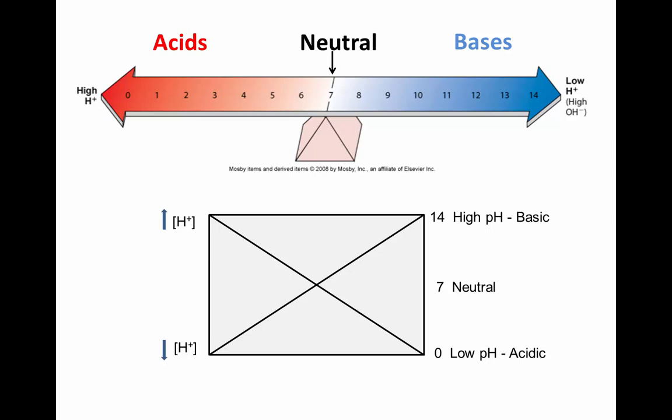Let's review: high hydrogen ion concentrations result in a low pH reading — these are acids. Low hydrogen ion concentrations result in a high pH reading — these are bases. When hydrogen ion concentration equals hydroxide ion concentration, the pH reading is at seven — neutral, neither an acid nor a base. This concludes the basic chemistry tutorial.